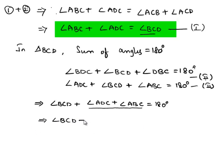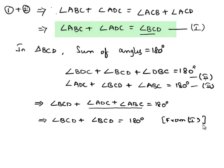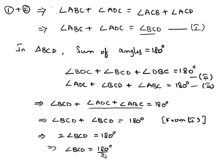Therefore we get angle BCD plus angle BCD is equal to 180 degrees, which implies 2 times angle BCD is equal to 180 degrees, which implies angle BCD is equal to 90 degrees. Hence we got angle BCD is equal to 90 degrees, which is the proof required for us.